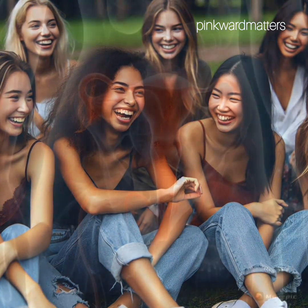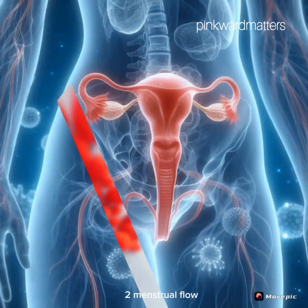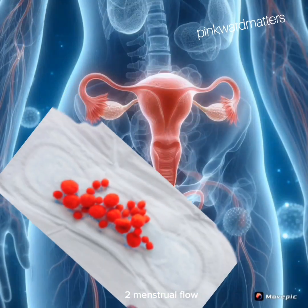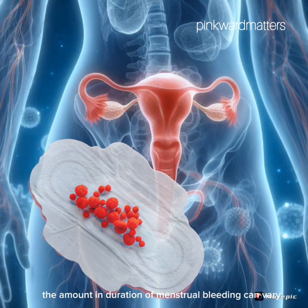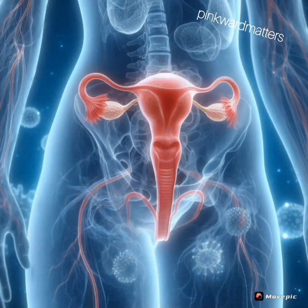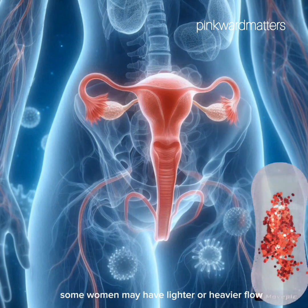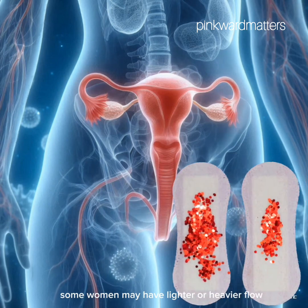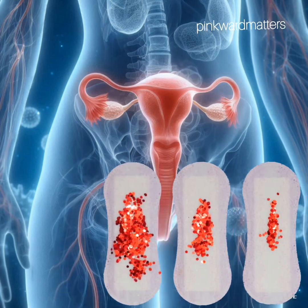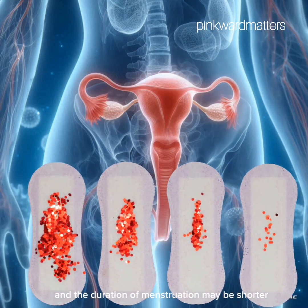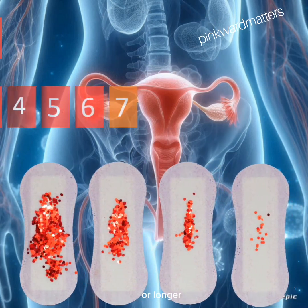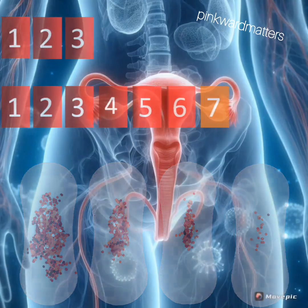Menstrual flow: the amount and duration of menstrual bleeding can vary. Some women may have lighter or heavier flow, and the duration of menstruation may be shorter or longer.